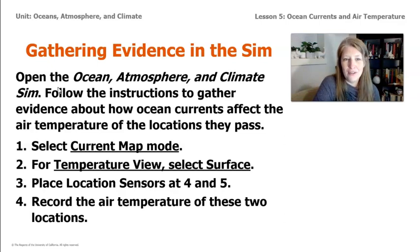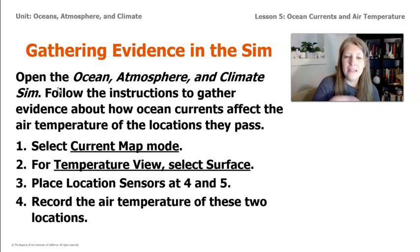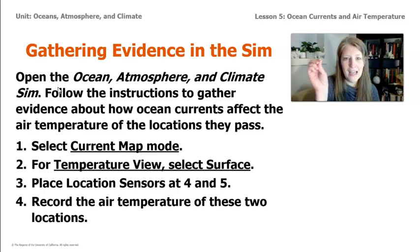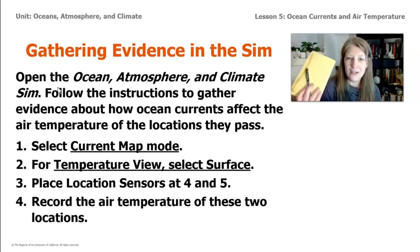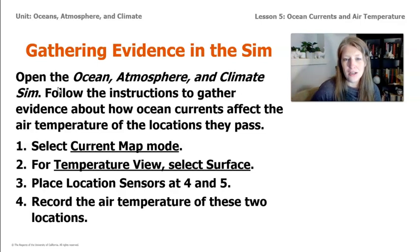The first step is to select current map mode, then for temperature view select surface, then place sensors at location 4 and location 5. Take a moment to jot down in your notes what the starting temperature of those two locations are before you do anything else.